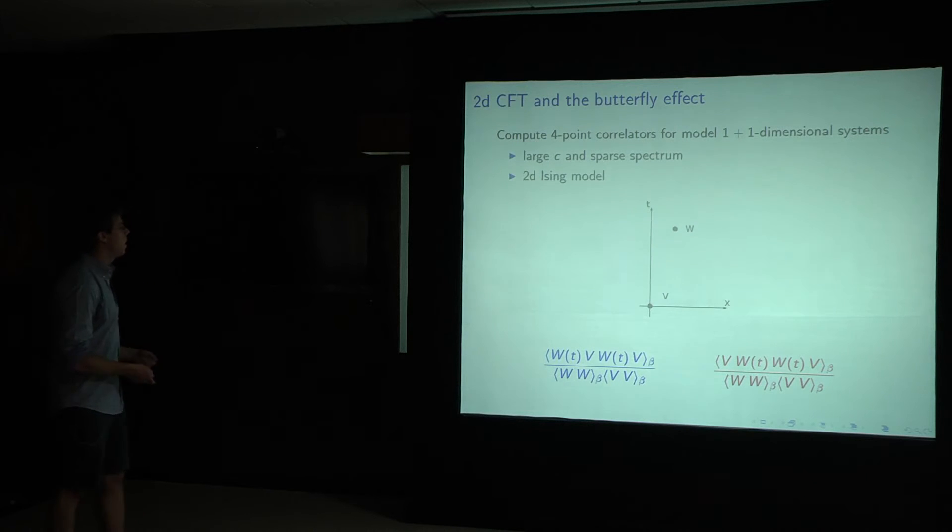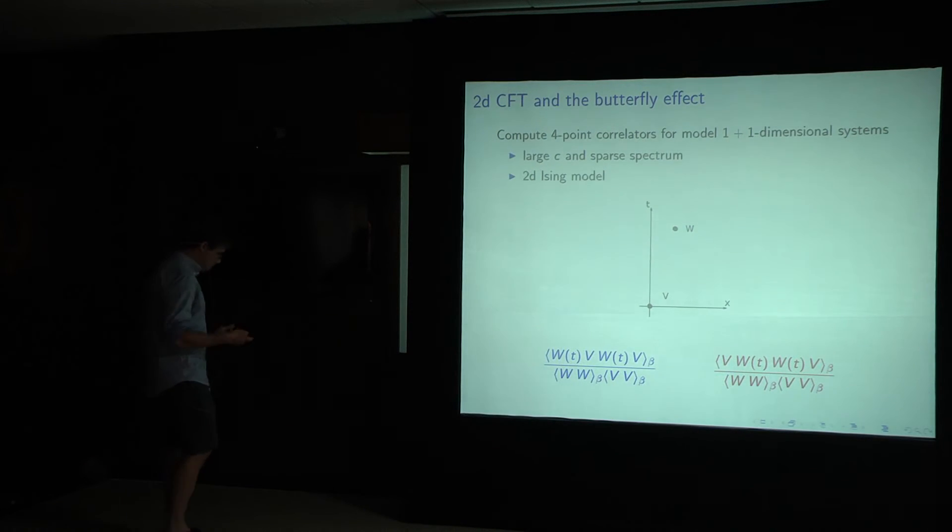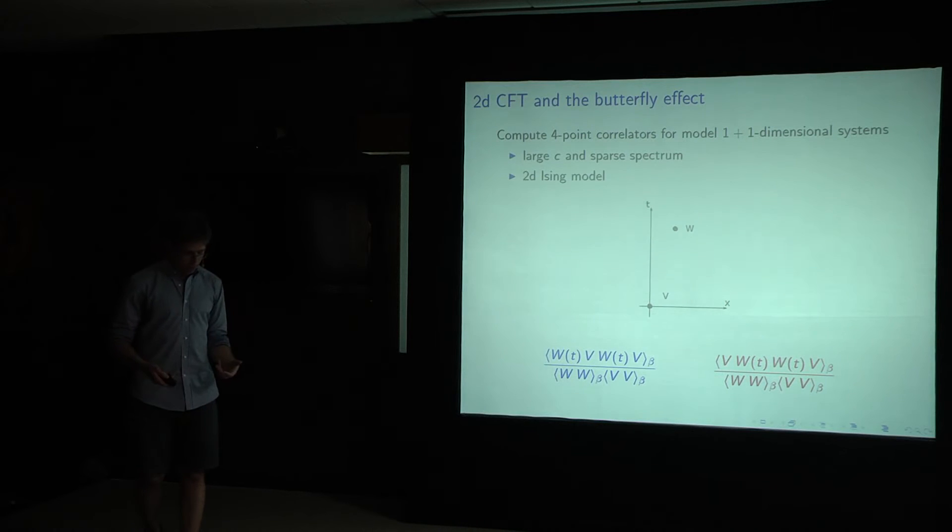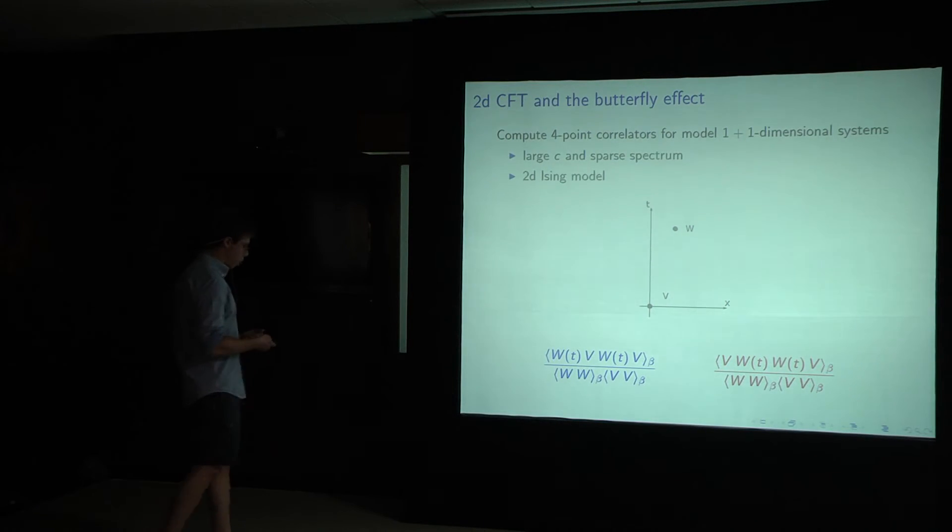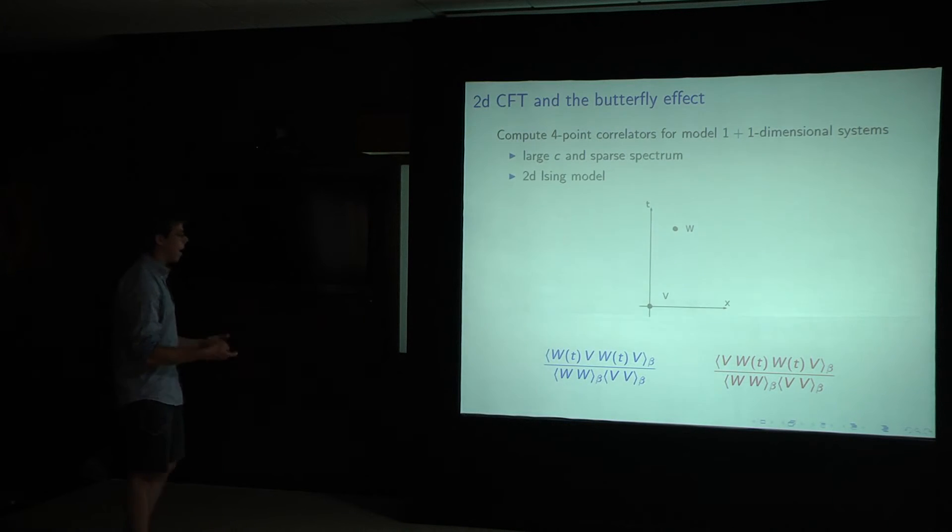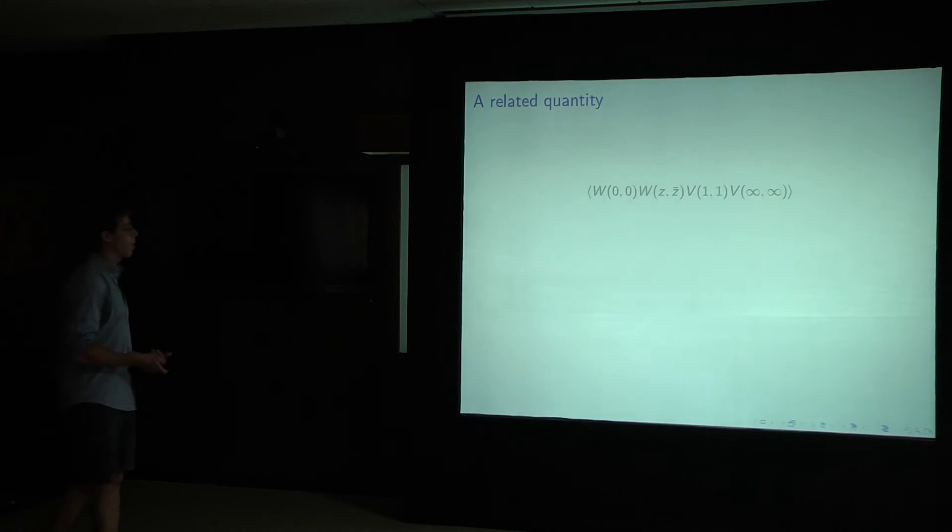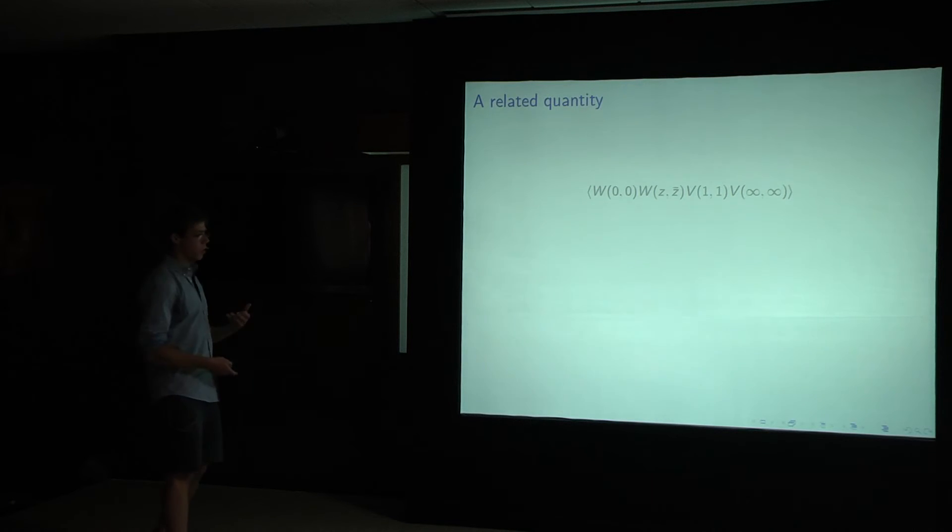And I should add that in the spin chain systems, it was very easy to attack the problem directly, but here it's not clear. We want to find out what, how chaos arises in these theories, or doesn't arise, what controls the chaotic behavior of the theory.